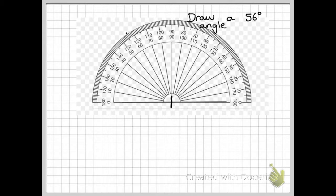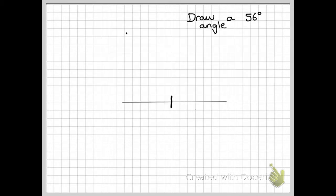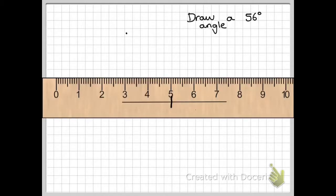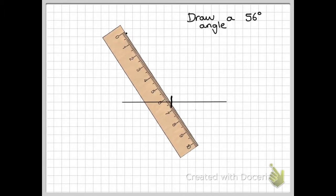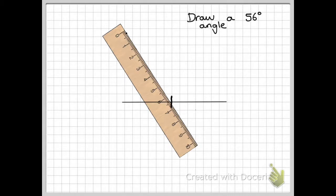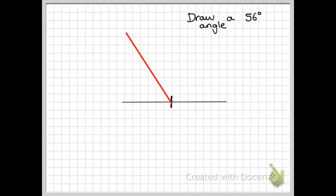Now once I've got that mark, I can then take my protractor away. Then it is just a case of getting my ruler and drawing a straight line from the two marks that I've done. And if I get rid of the ruler, there is my angle, perfectly drawn, 56 degrees.